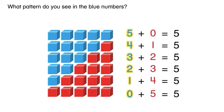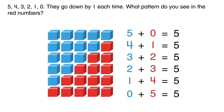What pattern do you see in the blue numbers? Five, four, three, two, one, zero. They go down by one each time.